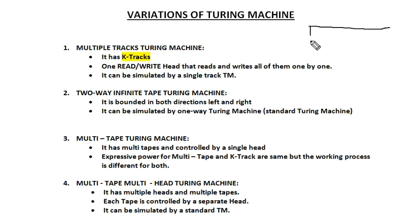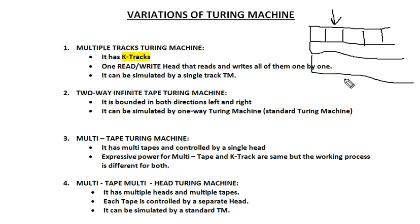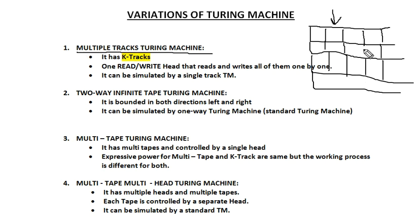A tape in a Turing machine has cells where the input string is stored, followed by blank symbols, and the tape head works over these cells. To expand this, the tape is divided into tracks — one, two, three, or more — depending on K. This is a K-track Turing machine, where each track is capable of storing a single input string.